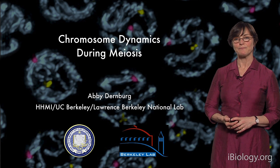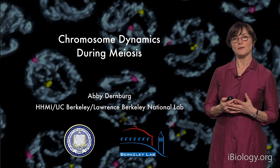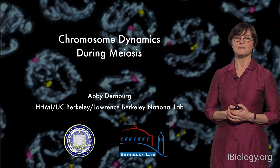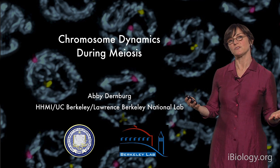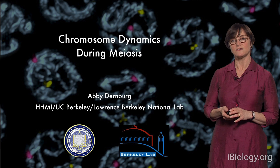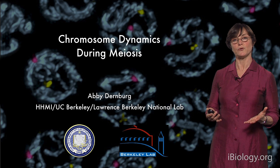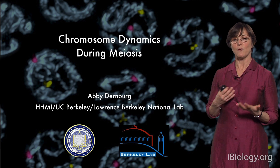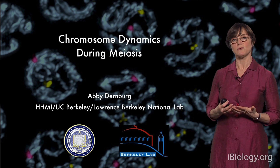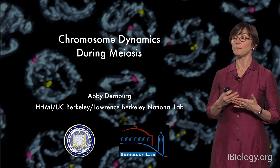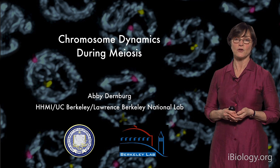Hi, I'm Abby Dernberg. In the previous two segments, I've introduced you to the process of meiosis — the process by which homologous chromosomes separate into different daughter cells to produce haploid gametes, or sex cells. I've told you what homologous chromosomes have to do to accomplish this segregation: they have to pair, synapse, and undergo crossover recombination.